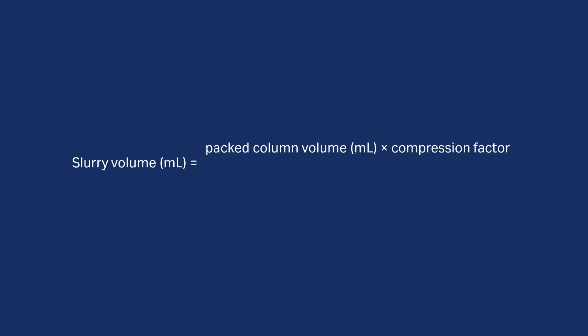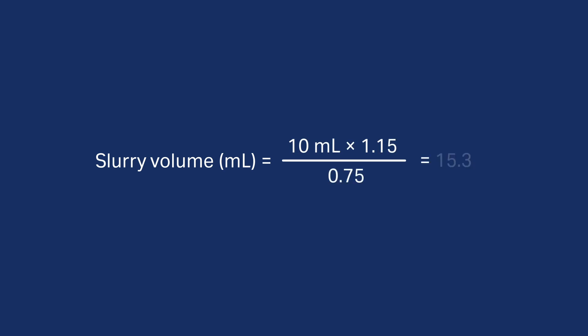To calculate the slurry volume needed to pack a column with a certain volume, the following equation can be used. For example, to pack a 10 milliliter column with a resin that has a slurry concentration of 75% and with a compression factor of 1.15, the necessary slurry volume will be 15.3 milliliters.